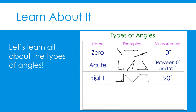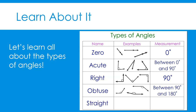The next type of angle is an obtuse angle. Obtuse angles look like this. You can see that the two rays are open or rotated farther apart than the rays in a right angle. Obtuse angles have a measure anywhere between 90 and 180 degrees. The last type of angle we will learn about today is a straight angle. Straight angles look like this — the two rays are pointing in exact opposite directions and form a straight line. Straight angles have a measure of exactly 180 degrees.